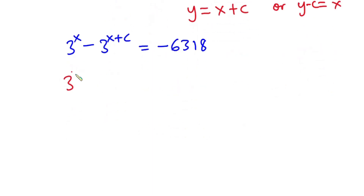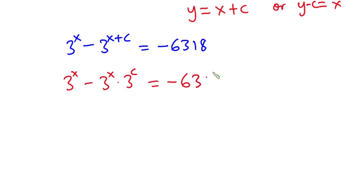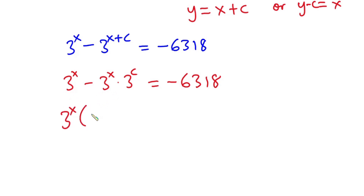This can also be written as 3 to the power x minus 3 to the power x times 3 to the power c, equal to negative 6318. We have 3 to the power x appearing in both terms, so let's factor it out. We get 3 to the power x times the quantity 1 minus 3 to the power c, equal to negative 6318.